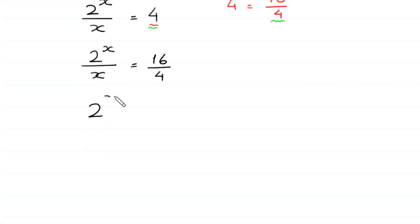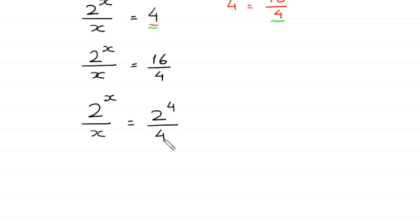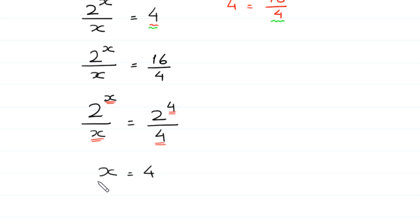We can write 16 as 2^4, so the right side becomes 2^4 over 4. Comparing left side with right side, we see 2^x on the left and 2^4 on the right, and in the denominator x on the left and 4 on the right. So it is obvious that x equals 4. This is the final answer. Thank you.